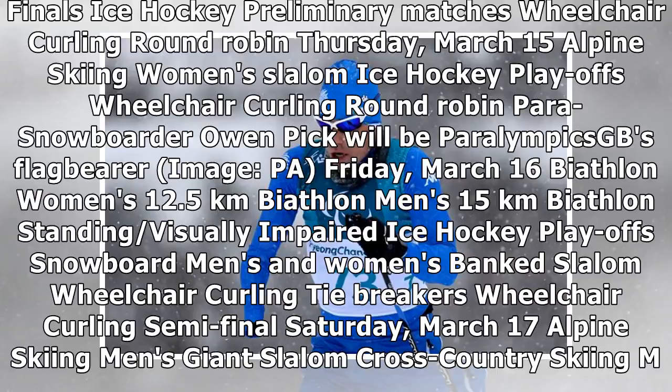Saturday March 17 continued — cross country skiing men's 7.5km, cross country skiing women's 5km classic, ice hockey bronze medal match, wheelchair curling bronze medal match, wheelchair curling gold medal match. Sunday March 18 — alpine skiing women's giant slalom, cross country skiing 4 by 2.5km mixed relay, cross country skiing 4 by 2.5km open relay, ice hockey gold medal match, closing ceremony.